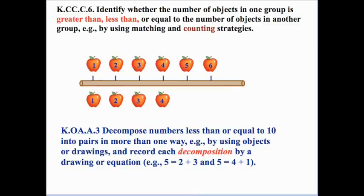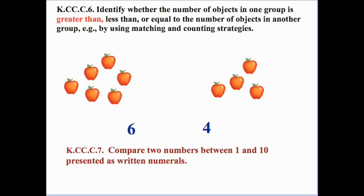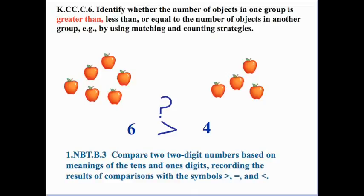We can also address the decomposition idea from standard K.OA.A.3. We can decompose the six on top into a four and a two — that's our whole quantity of six. Looking at our original situation, we have six on the left and four on the right. We can write the numbers down symbolically to address standard KCC.C.7. We know that six is greater than four.